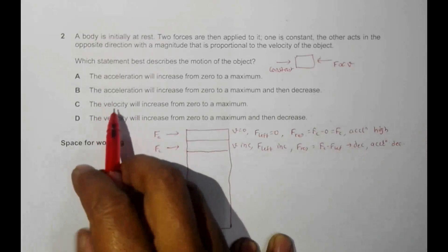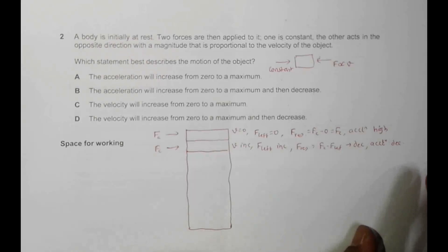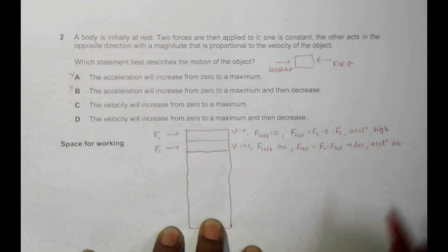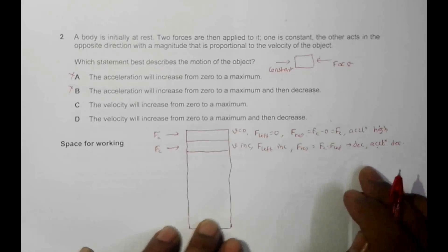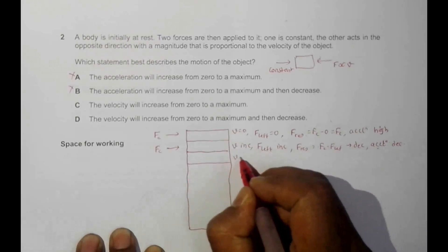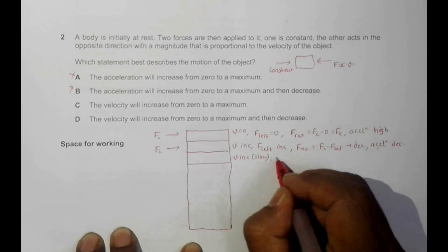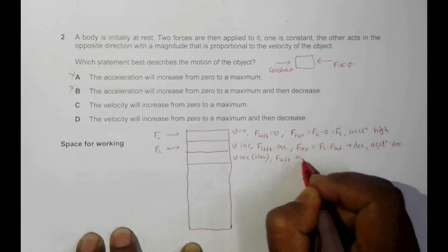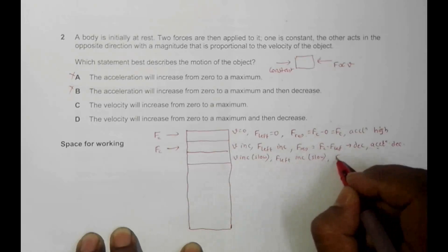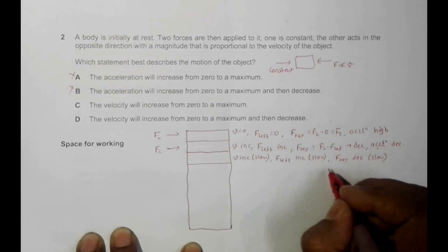So initially acceleration was high and it decreases. From this, choices A and B are disqualified because they say acceleration increases. V increases but more slowly, F left also increases but slowly, so F resultant decreases slowly, meaning acceleration decreases slowly.